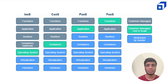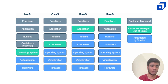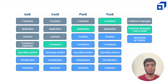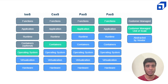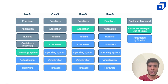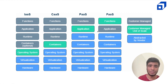IaaS — Infrastructure as a Service — means the customer is provided with an operating system. The underlying hardware, virtualization, and hypervisor are all abstracted by the vendor. EC2 is a good example of IaaS. CaaS — Containers as a Service — provides customers with containers on which they can run their applications.